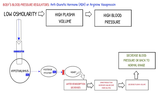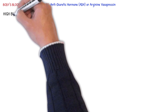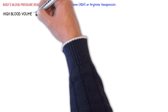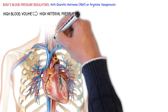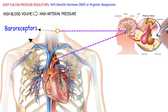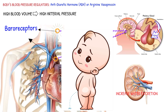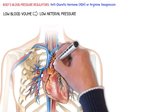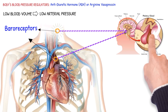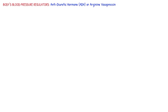Vasopressin is also released in response to a decrease in blood volume, related to the baroreceptor reflex. When baroreceptors detect high arterial blood pressure due to stretch in the aortic arch and carotid sinus, impulses inhibit vasopressin secretion, resulting in increased water excretion, decreased plasma volume, and consequently decreased blood pressure. Conversely, if blood volume decreases, the stretch of the carotid sinus and aortic arch decreases, vasopressin release increases and water excretion decreases, helping to restore blood volume and blood pressure to normal.